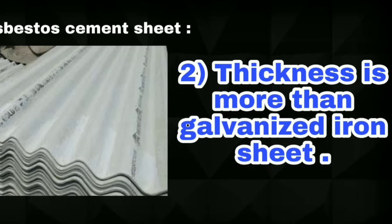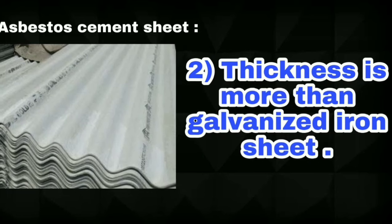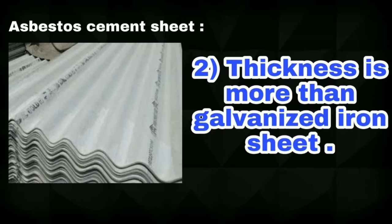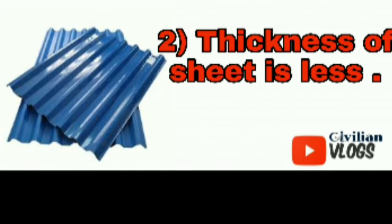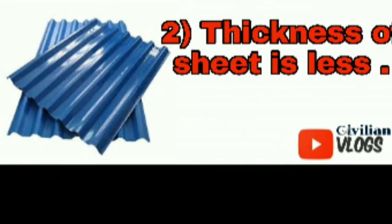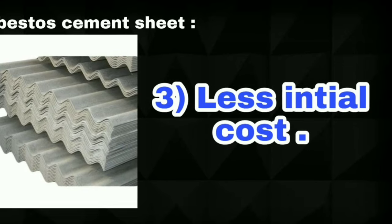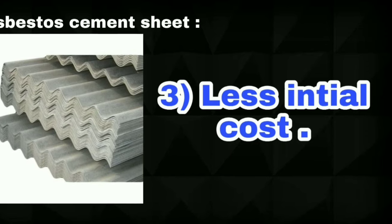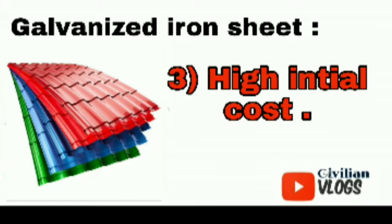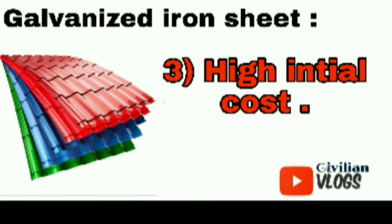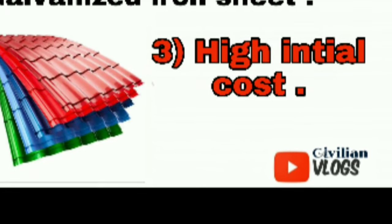Asbestos cement sheet thickness is more than the galvanized iron sheet. The thickness of the galvanized iron sheet is less. Absolutely, the iron sheet thickness is more than the asbestos cement sheet. The initial cost of asbestos cement sheet is less compared with the galvanized iron sheet.